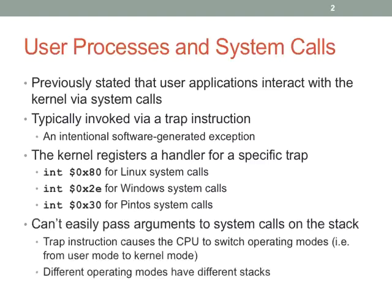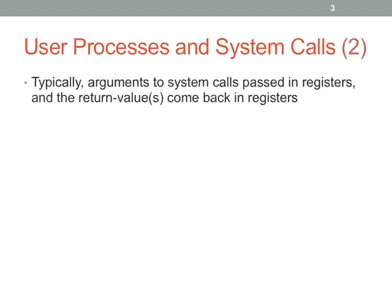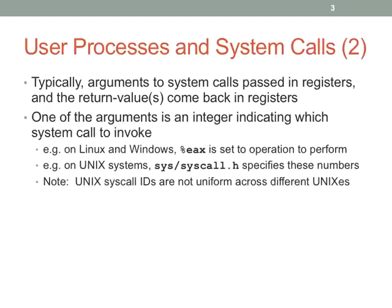There's not an easy way of passing arguments to system calls because you switch stacks. The user stack location is stored on the kernel stack, so you could follow it, but nobody really does that. Typically we pass things in registers, and because of that you have a limited number of arguments. One of the arguments has to specify which system call to invoke. The return value goes back into EAX, which is similar to cdecl. Linux and Windows use EAX to specify the operation, with values defined in syscall.h — and they're not always the same from platform to platform.